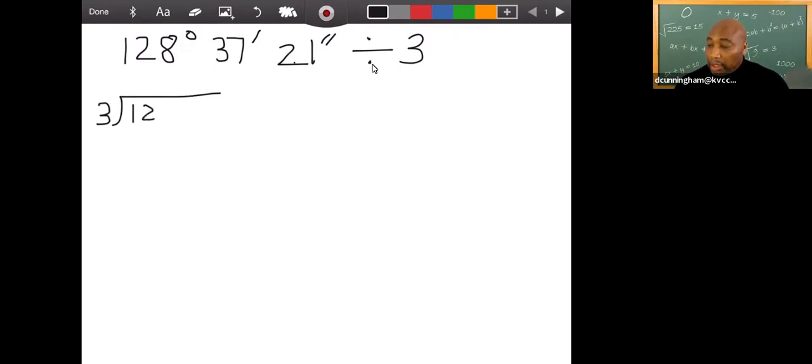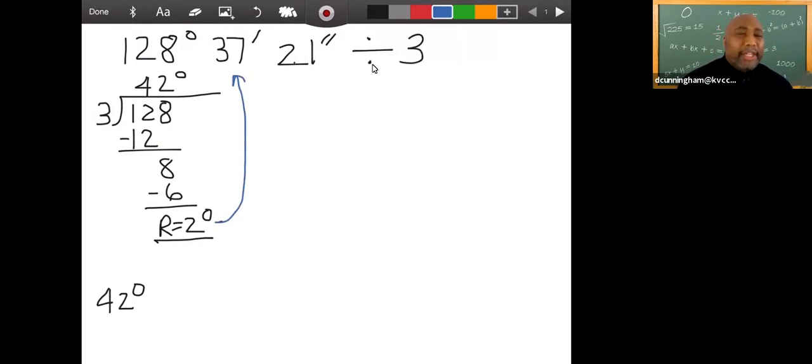So start off with 128 divided by three. So three into 12 is four. Bring down the eight. This is two. This is six, and we have a remainder of two. Now that remainder of two is two degrees because the only thing we did was divide the degrees. And so right now we have 42 degrees. That's on the top. That's our quotient. But our remainder, we're going to add that two degrees to the minutes and then divide that by three.